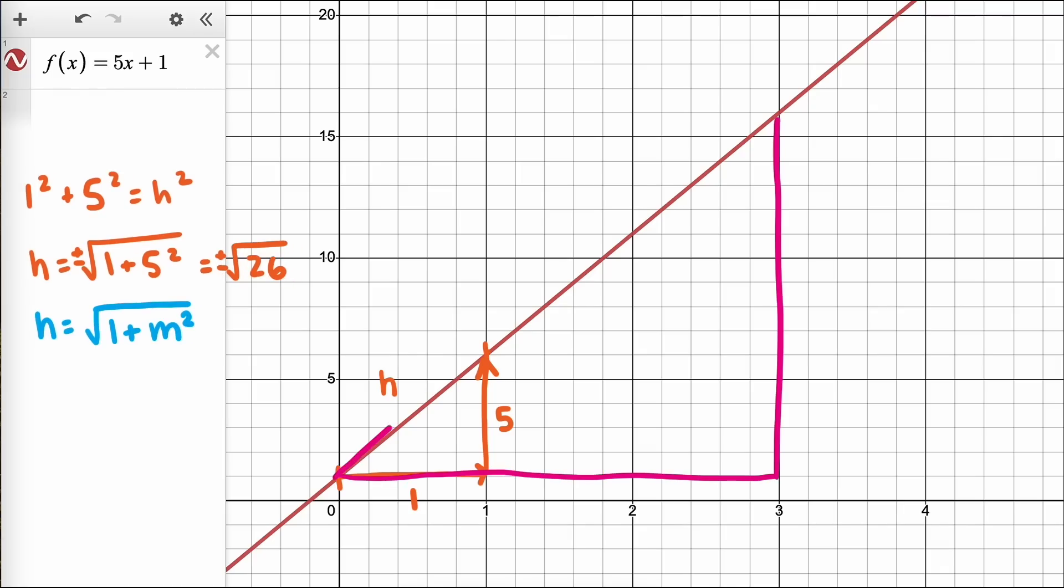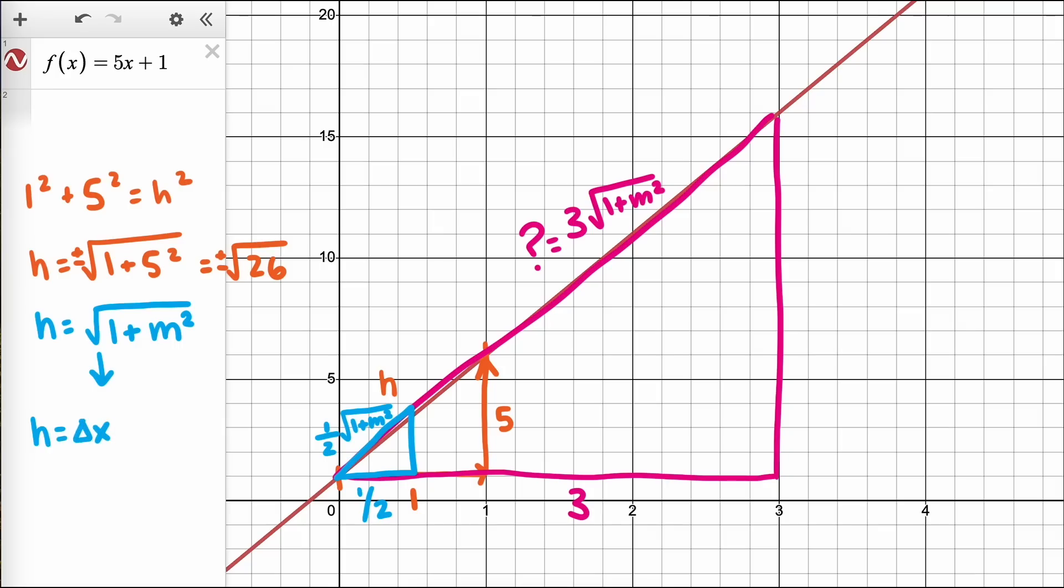What if we don't go over just one unit in the x direction? Well, we can multiply the square root expression by the length in the x direction, since these are all similar triangles to the first. So now we have an easy way to calculate the length of a straight line if we know the slope and the horizontal distance.